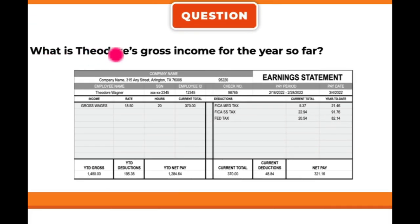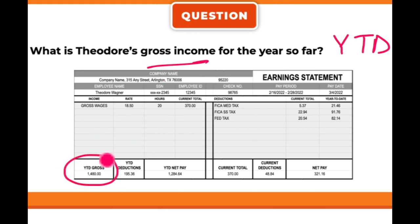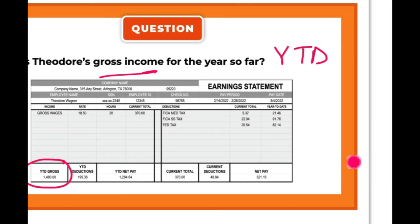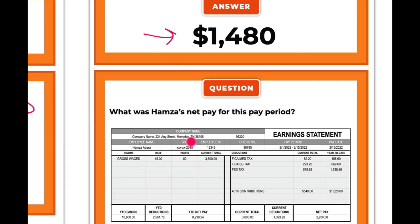What is Theodore's gross income for the year so far? That's a year-to-date question — everything so far. Gross income is this number right here: $1,480. And we see that on the next card.